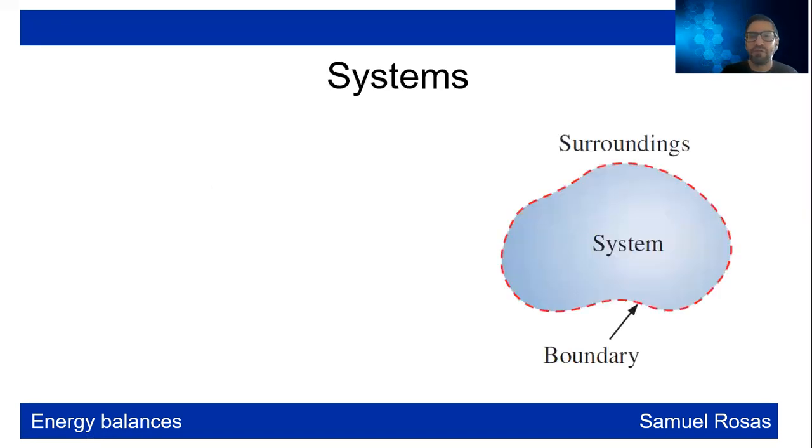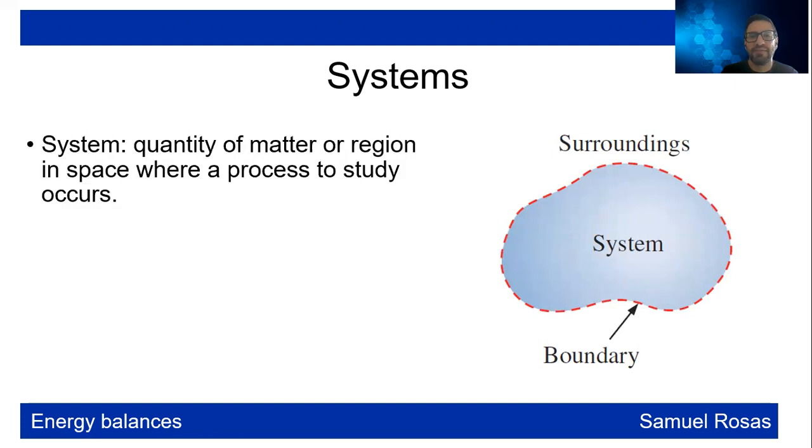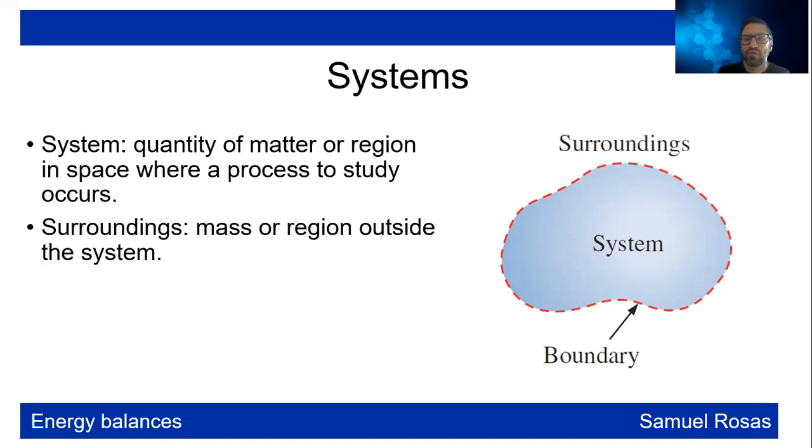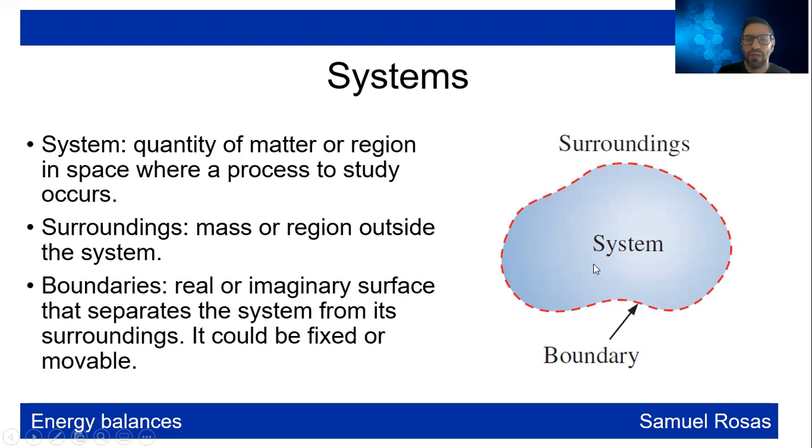The first is the concept of systems. A system is a quantity of matter or region in space where a process that we're going to study has to occur, and it has a surrounding. Mass or region that is outside the system is all the surroundings, and it is divided by the boundary. This is a real or imaginary surface that separates the system from its surroundings. It could be fixed or it could be movable.